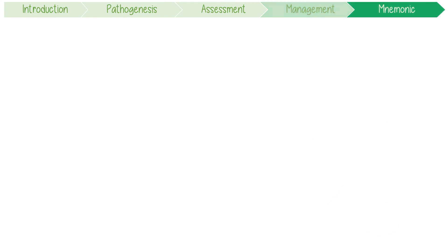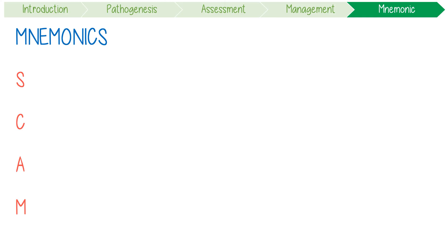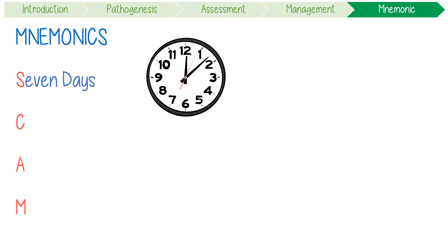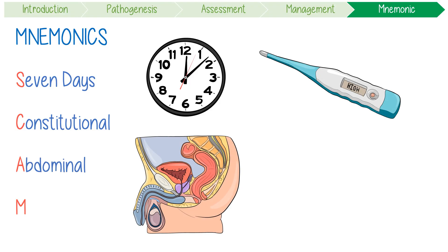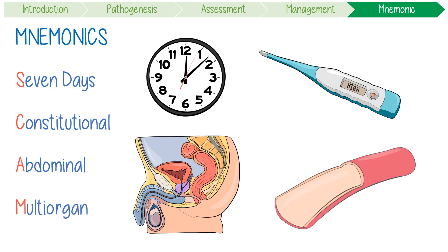To recap its phases using a quick mnemonic: this disease is the scam of a lifetime because it's going to kill you. Its incubation period is seven days, and so are each of its other phases. The first phase causes constitutional symptoms like a fever, which progresses into abdominal issues like diarrhoea, and finally it causes multi-organ failure.